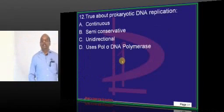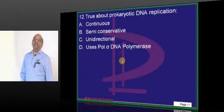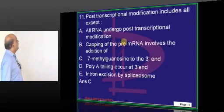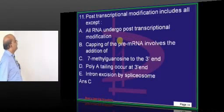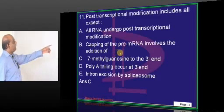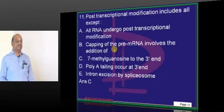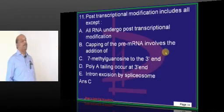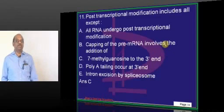Regarding prokaryotic DNA: capping of pre-mRNA involves the addition of 7-methylguanosine at the 5' end. The word was missing from the question — it is the addition of 7-methylguanosine.